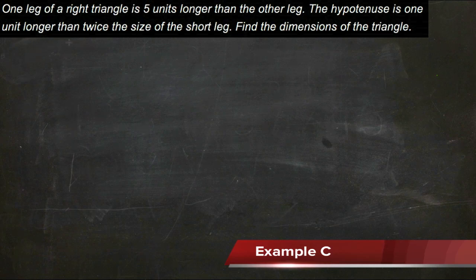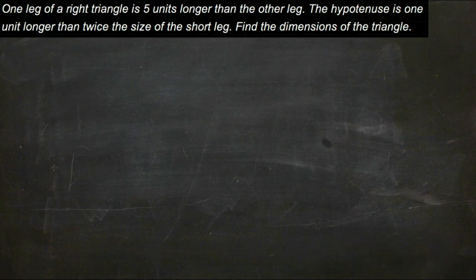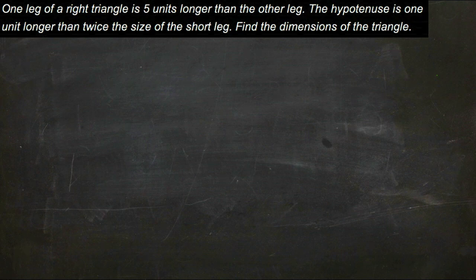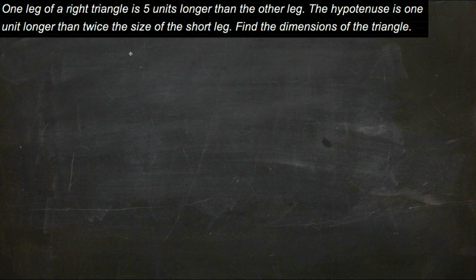The information we're given says that one leg of a right triangle, so we do know we can use the Pythagorean Theorem, which is nice, is five units longer than the other leg, and the hypotenuse is one unit longer than twice the length of the short leg. We need to find the dimensions of the triangle.